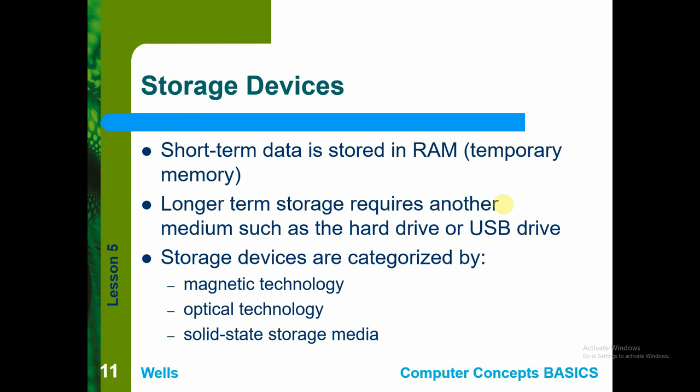For data storage, certain data is stored in RAM for short-term use, while longer-term storage uses a hard drive or USB drive. Storage devices are categorized into three types based on their technology: magnetic technology, optical drives, and solid state — with solid state storage, or SSD, becoming the most common today.